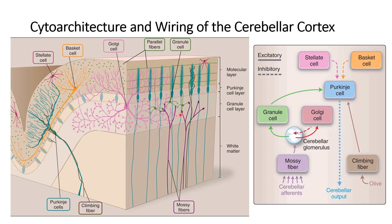These fibers enter the granular cell layer, where connections occur. The Golgi cells are large cells with extensive extensions that reach all the way into the molecular layer and connect with Purkinje cells. The middle layer is mainly Purkinje cells, with fibers in the molecular layer. In the molecular layer you also see stellate cells, which are more superficial, and basket cells, which are deeper. You can also see the climbing fibers, which come directly from the olive and go to the Purkinje cells.